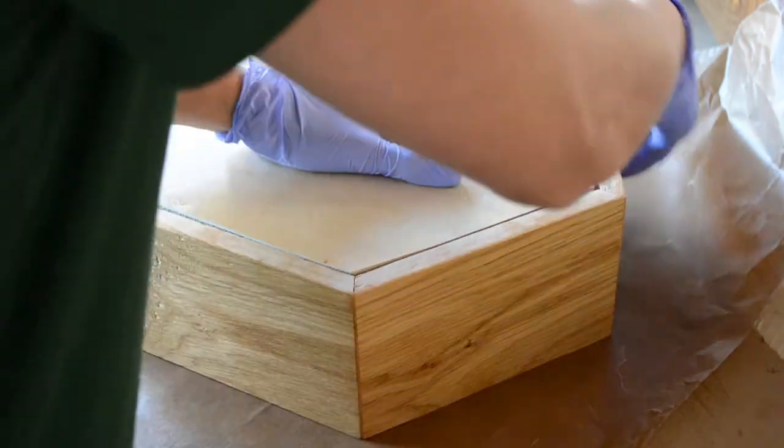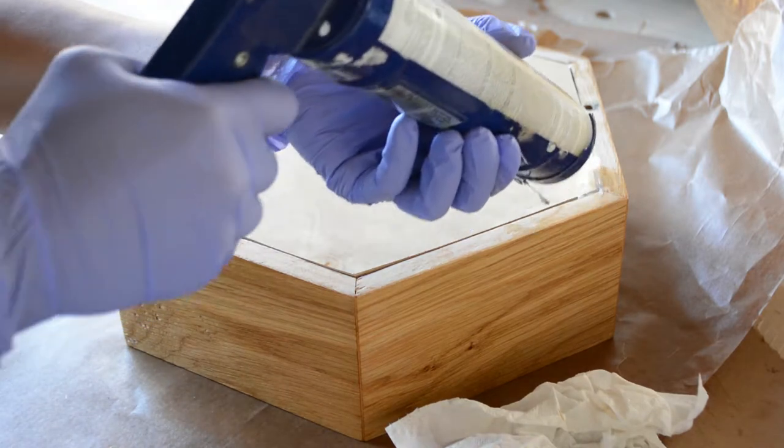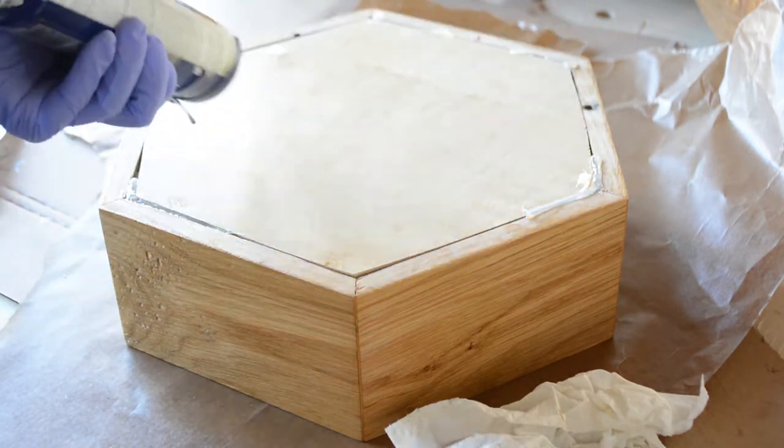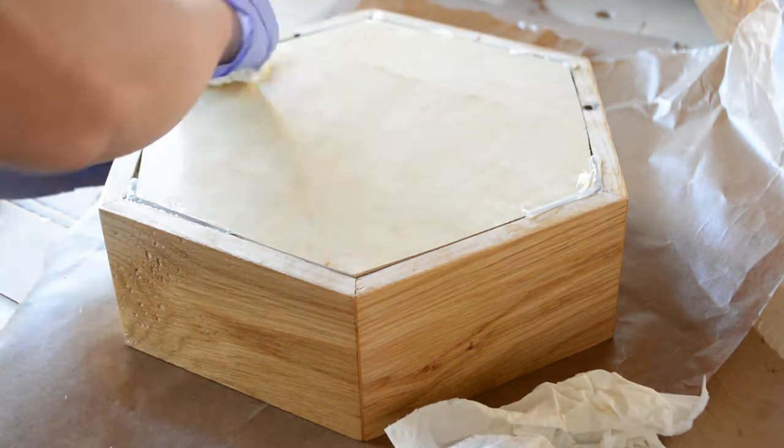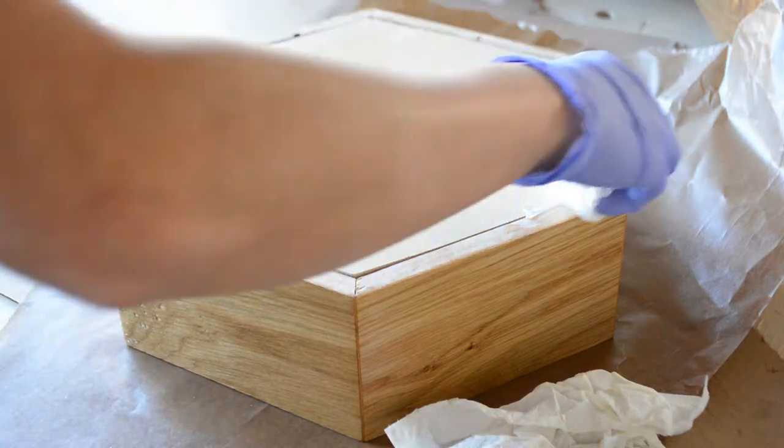My blue gloves are really handy in this case because I can change them out if I accidentally touch the silicone caulk. That stuff gets stuck to everything, and I would hate to smear it on the pretty face of the wood.